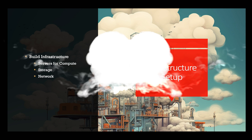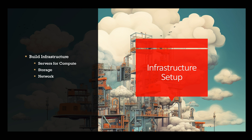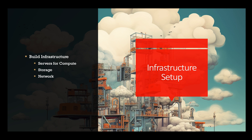For infrastructure setup, choose between on-premises hardware or cloud service providers. Cloud providers offer flexible and scalable infrastructure, making them a popular choice. Choose a cloud provider such as AWS, Azure, or GCP, or set up your own data centers. Deploy servers with adequate computing power and storage capacity. You can use services like AWS EC2, Microsoft Azure Virtual Machines, or GCP Compute Engine to set up virtual servers.